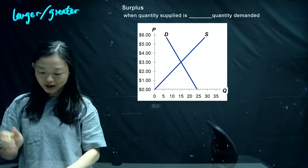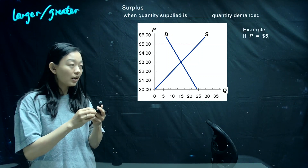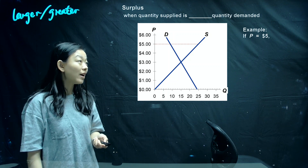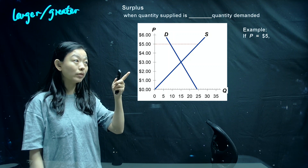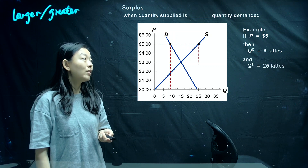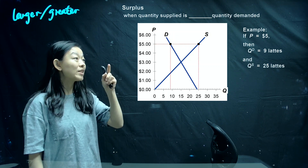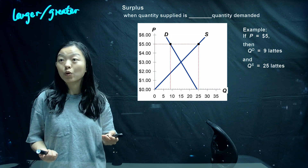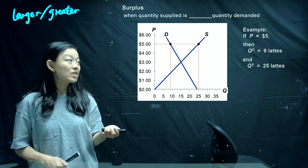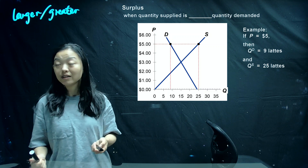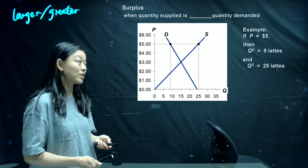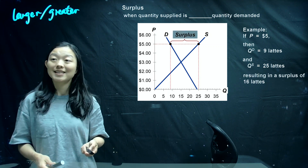In this graph, if the price equals $5, we can find the corresponding point on the supply curve, which equals 25 lattes. However, for the demand side, only 9 lattes will be bought at $5 per latte. So in this case, quantity supplied — 25 lattes — is greater than quantity demanded — 9 units. Therefore, it will create a surplus of 16 units.